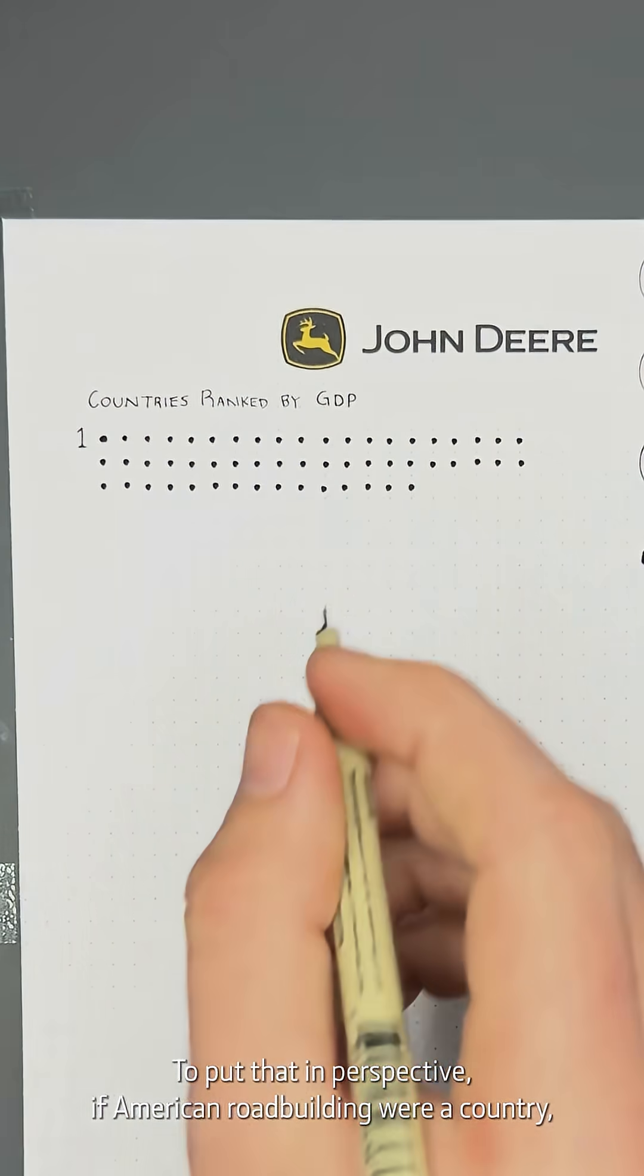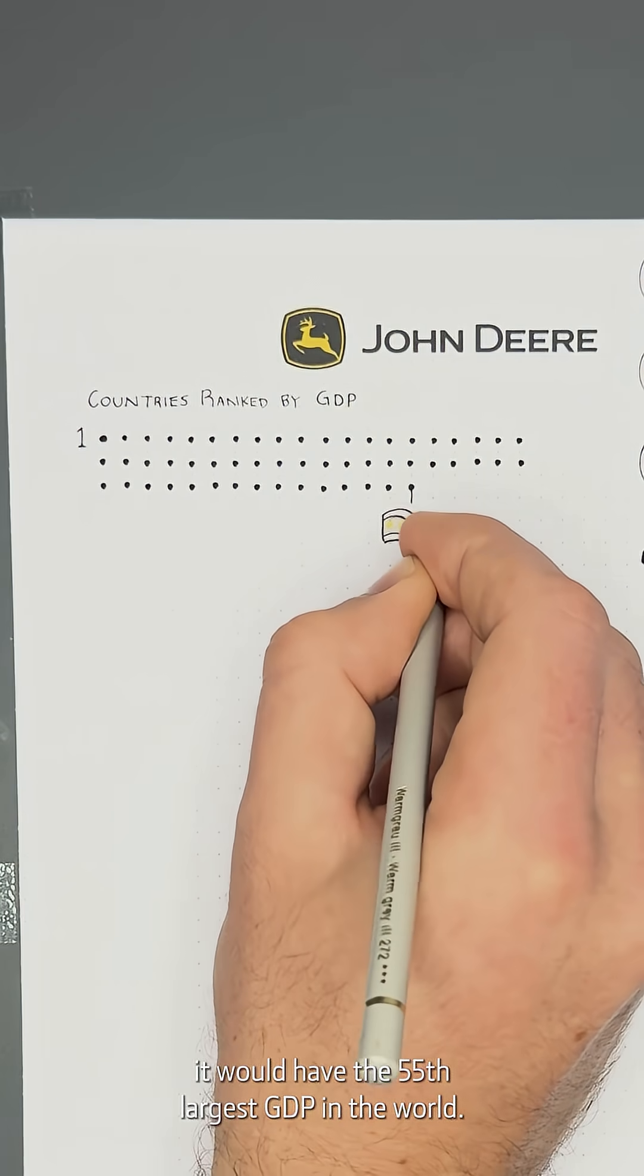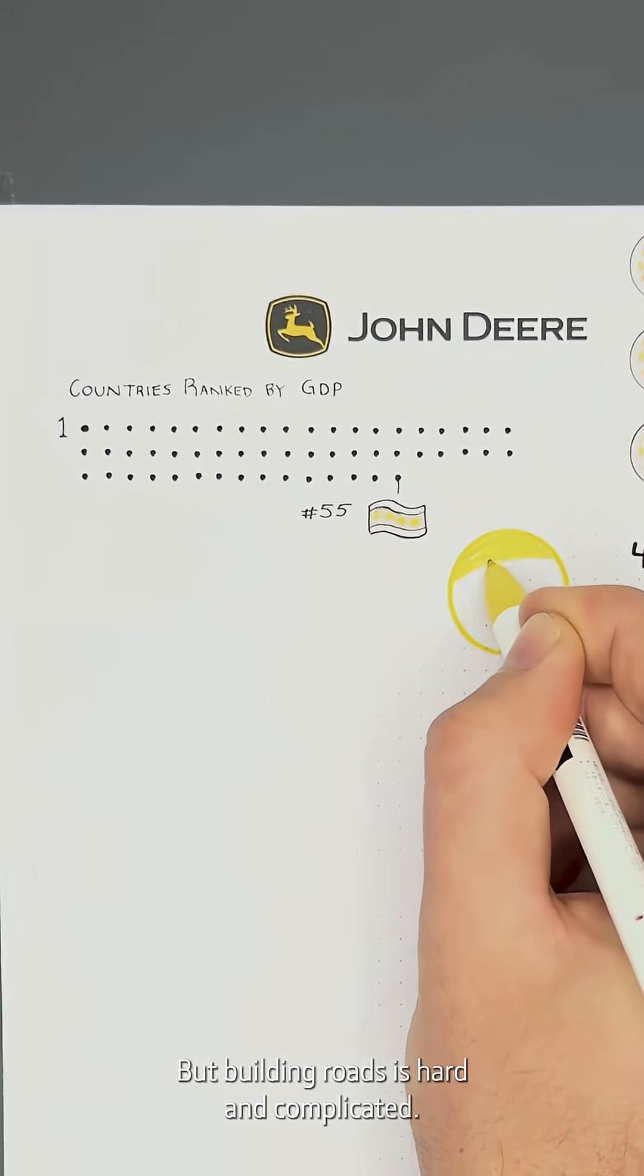To put that in perspective, if American road building were a country, it would have the 55th largest GDP in the world. But building roads is hard and complicated.